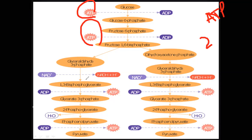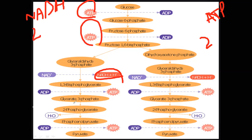Glyceraldehyde 3-phosphate is interconvertible with dihydroxyacetone phosphate, so there are two molecules of glyceraldehyde 3-phosphate. When glyceraldehyde 3-phosphate is converted into 1,3-bisphosphoglycerate, one NADH is produced on each side, so 2 NADH total are produced. When 1,3-bisphosphoglycerate is converted into 3-phosphoglycerate, 1 ATP is produced from each side — so 2 ATPs from substrate-level phosphorylation. In the last step, when phosphoenolpyruvate is converted into pyruvate, another 2 ATPs are produced.